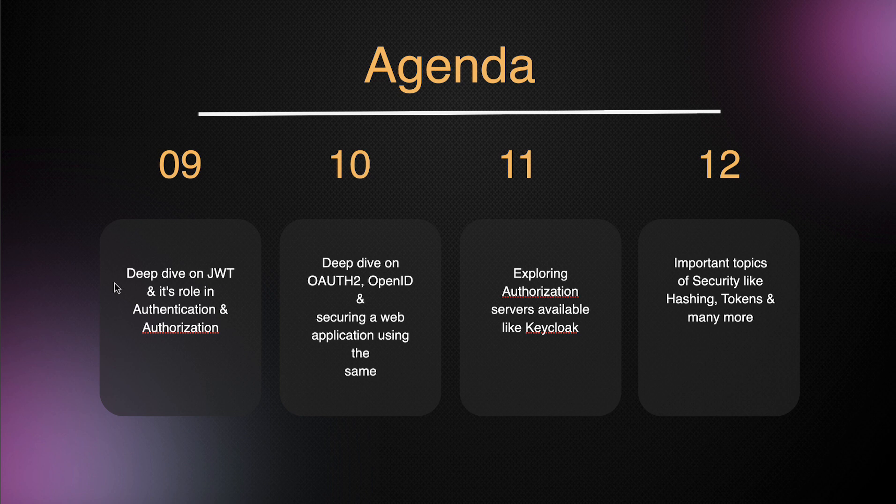The next section covers how to implement Spring Security using a JWT token. Simply put, JWT is a string with a fixed format — it has three parts, and each part has its own significance. All parts must be validated and matched; only if everything is correct do we allow access to the API.